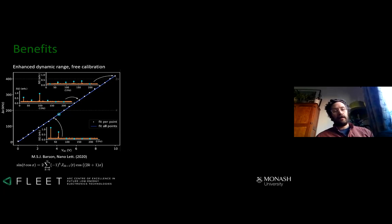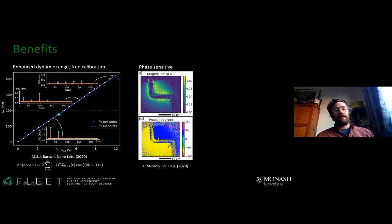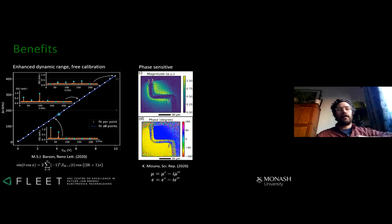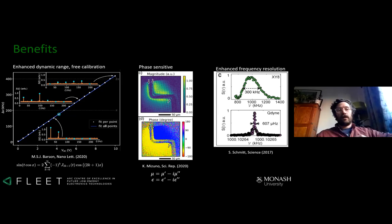This Bessel function relationship describes the harmonics and I can also extract phase. There's a wide-field NV image example where they simultaneously measured both the magnitude and the phase of a magnetic field from a wire. I think this will be really important for condensed matter imaging because it means you can measure complex material properties — both μ' and μ'' — allowing you to image the losses of materials. This quantum lock-in method also gives a major enhancement in frequency resolution.